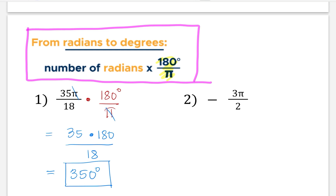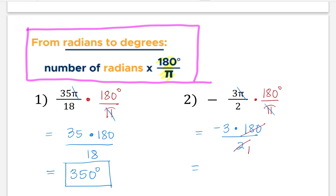Let's try number two. We are going to multiply the given with 180 degrees over pi. We cancel the pi symbol in the numerator and denominator, and so this will give us negative 3 times 180 over 2. We can simplify by dividing 180 by 2 to get 90, then multiply 90 with negative 3. That would be negative 270 degrees.